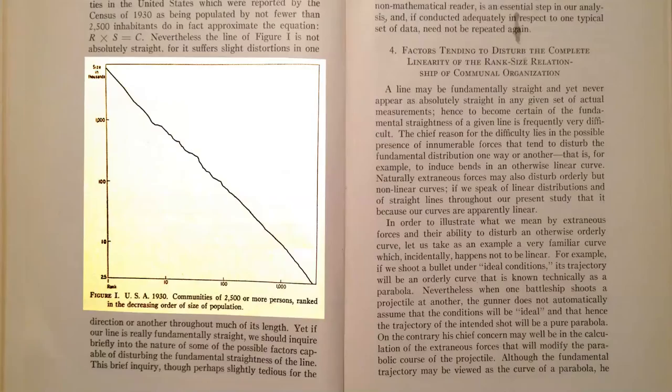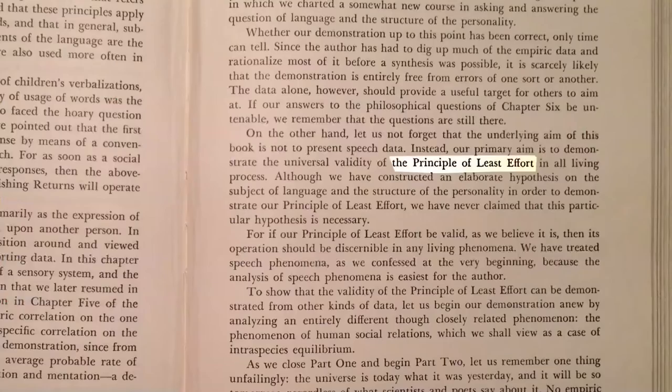The lengths of newspaper articles, the populations of cities — always there was this 45-degree straight line. Zipf's theory was that it reflected a principle underlying all human behaviour, which he called the principle of least effort. Today this straight line is known as Zipf's law, and it crops up everywhere: the popularity of web pages, the sales of books, the amounts of people's salaries. Yet Zipf's explanation for it seems to have been forgotten.